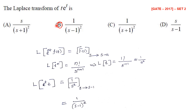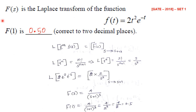Next question: f(s) is the Laplace transform of f(t) = 2t²·e^{-t}. What is the value of f(1) correct to two decimal places? This is a GATE 2018 Set 1 question. Using the formula, the Laplace transform of t^n is n!/s^{n+1}. For t², n equals 2, so the Laplace transform of t² is 2!/s³ = 2/s³.